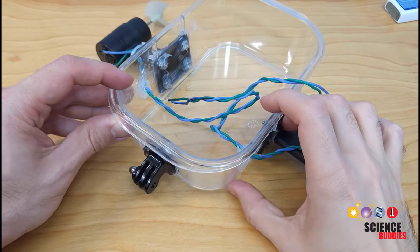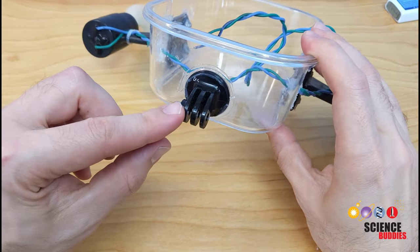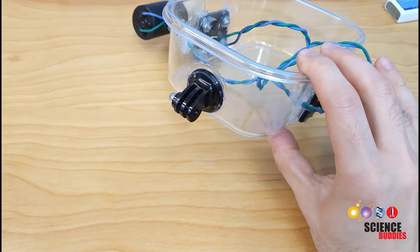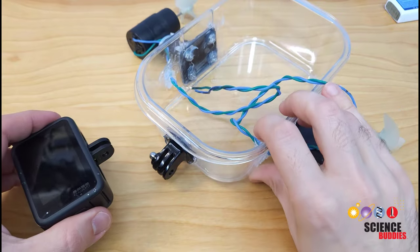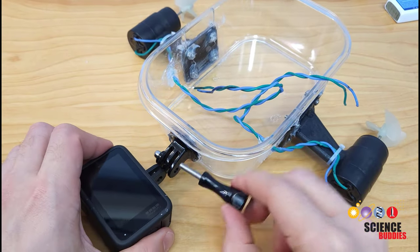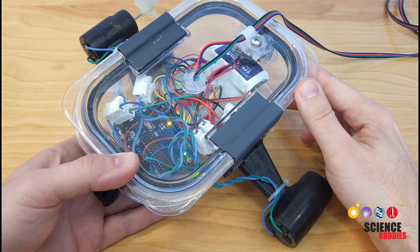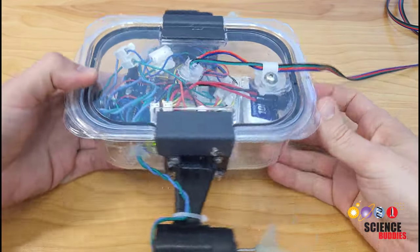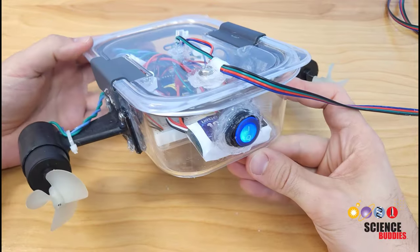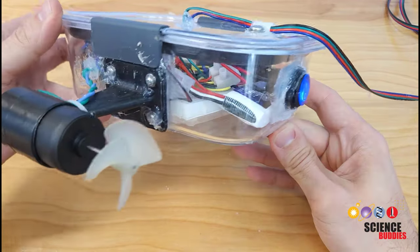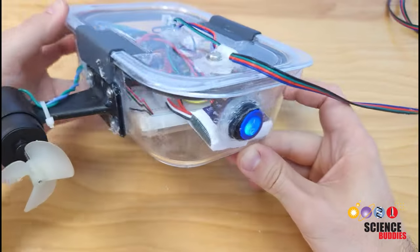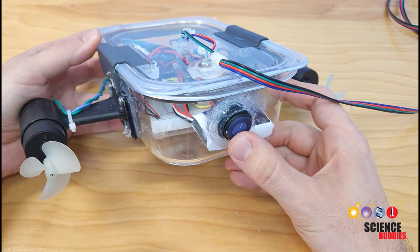You might also want to make some changes or improvements to your design, depending on how your initial testing goes. For example, I decided that I wanted to get my basic steering controls working before I added a mount for the waterproof camera. I also found it inconvenient that I needed to remove the lid to turn the Arduino on and off, so I purchased a waterproof switch and drilled another hole in the container, so I could turn the ROV on and off without removing the lid.